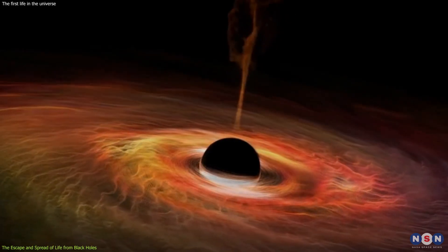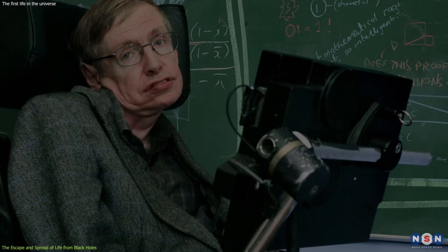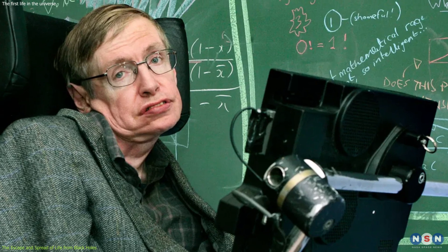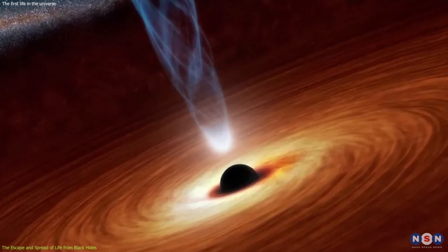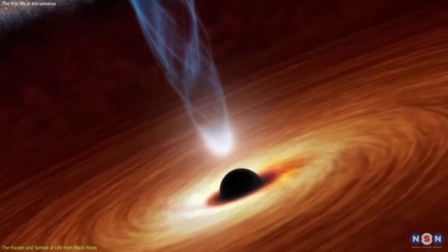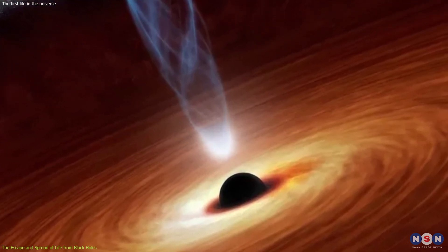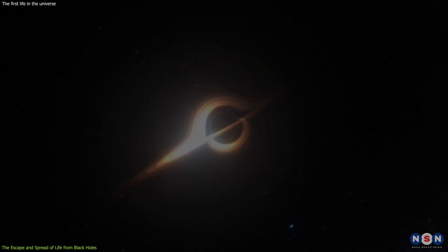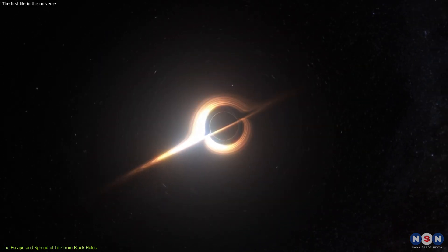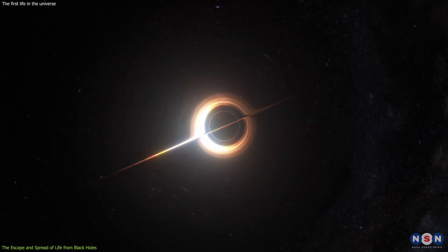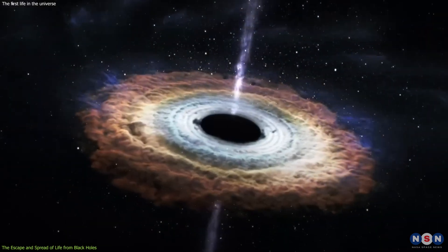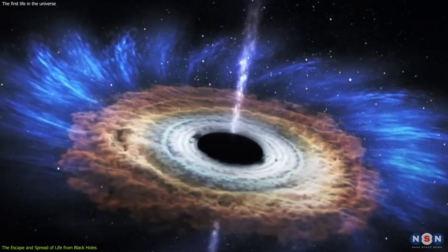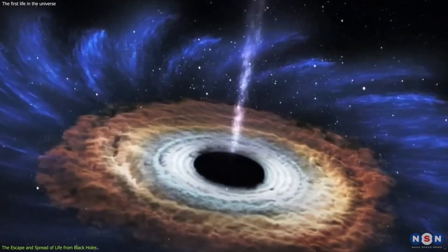Hawking radiation is a phenomenon that was predicted by the famous physicist Stephen Hawking in 1974. He showed that, due to quantum effects, black holes can emit particles and radiation from their event horizon, which is the outer boundary of the black hole. This means that black holes are not completely black, but rather they glow with a fainter and fainter light as they evaporate.